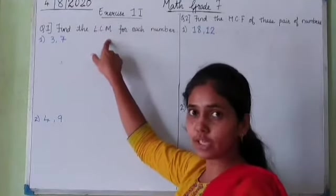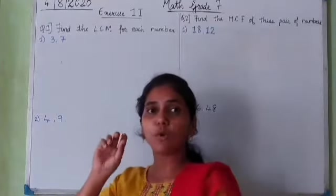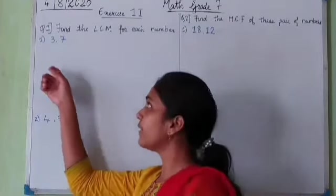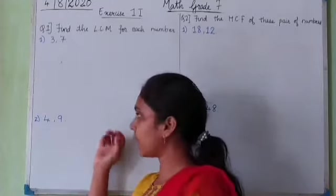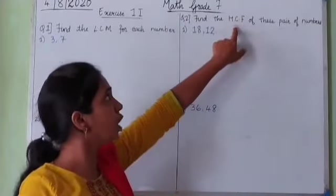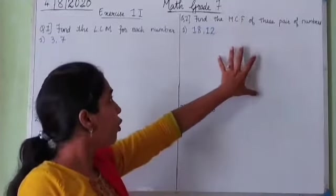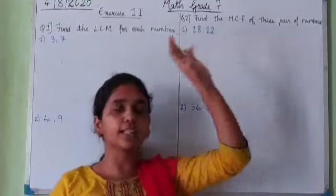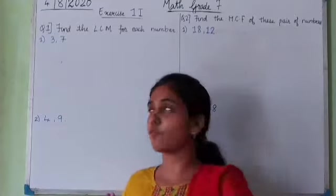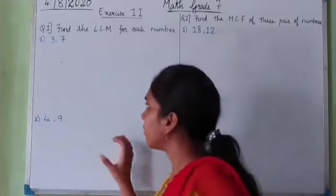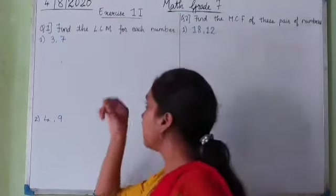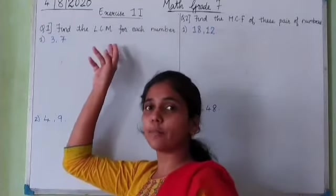Now we move to the lowest common multiple. LCM means the smallest multiple common to two given numbers. LCM is important when we do addition or subtraction of fractions — that is when we need the LCM of the denominators.